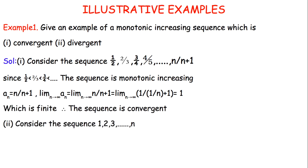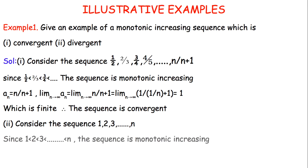Now consider the sequence 1 up to N. We have to determine its property that it must be monotonically increasing. Consider AN = N; the limit as N approaches infinity of AN gives limit N approaches infinity of N, which equals infinity. So this is a divergent sequence.